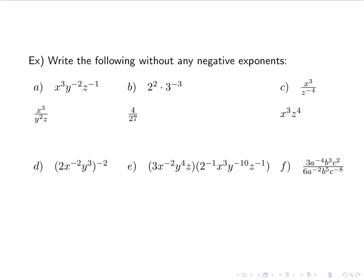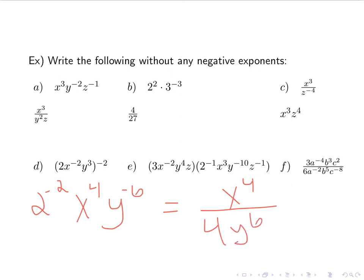For our first one in the last set, we have 2x to the negative 2 y cubed, all raised to the negative 2. Remember the rules of exponents: if I have a product raised to a power, I raise each factor to that power. So I have 2 to the negative 2, x to the negative 2 to the negative 2 — multiplying those exponents gives positive 4 — and y cubed to the negative 2 gives y to the negative 6th. Everything with a negative exponent goes in the denominator. So x to the 4th stays on top; on the bottom I have 2 squared, which is 4, and y to the 6th.